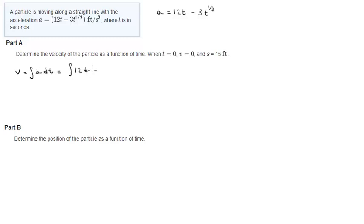And this is 6t squared minus 2t to the 3/2 plus C. And C is 0 because when t equals 0, the velocity is 0, so that will make this the final answer for part A.